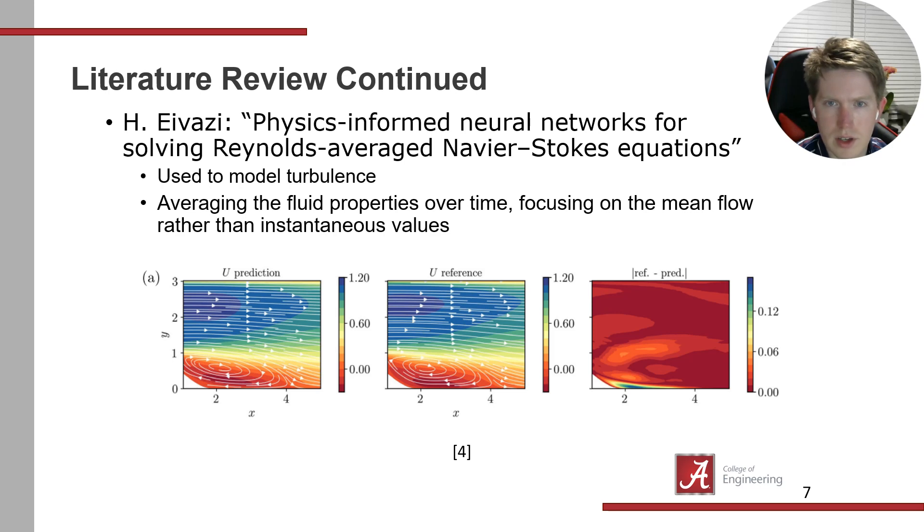The last paper is Ivazi's physics-informed neural networks for solving Reynolds-averaged Navier-Stokes equations. This is specialized for turbulence. They average fluid properties over time rather than instantaneous values, focusing on mean flow for more accurate results. The first image shows their prediction, the next is the truth value, and the third is the difference. For such a chaotic image, they did a remarkable job creating almost the exact output.